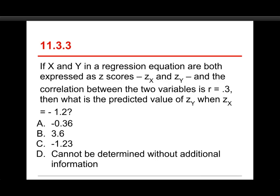Number 3. If X and Y in a regression equation are both expressed as Z scores, so Z sub X and Z sub Y, and the correlation between the two variables is R equals 0.3, then what's the predicted value of Z sub Y when Z sub X is negative 1.2? The choices are negative 0.36, or 3.6, or negative 1.23, or can't be determined without additional information.